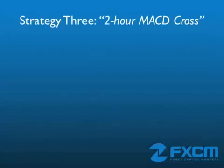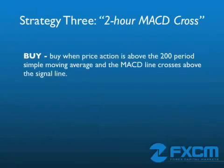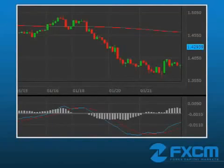That's really the only purpose of the moving average in this strategy. Most of the time, we'll be focusing on the MACD indicator, which will provide our buy and sell signals. If the pair is in an uptrend, we want to look for buying opportunities — when the MACD line crosses above the signal line, we'll buy, and hold until the MACD line crosses back below the signal line. If the pair is in a downtrend, we want to look for selling opportunities — when the MACD line crosses below the signal line, we'll sell, and hold until the MACD line crosses back above the signal line.